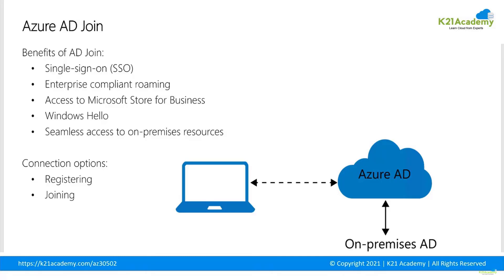The connection options are registering and joining. Registering a device to Azure AD enables you to manage a device identity — Azure AD device protection provides the device with an identity used to authenticate when a user signs into Azure AD. Joining a device is an extension to registering, providing all the benefits of registering plus changing the local state of the device, enabling users to sign in using their organizational work or school account instead of personal accounts. Registration is often combined with a mobile device management solution like Microsoft Intune, which provides additional device attributes in Azure AD.